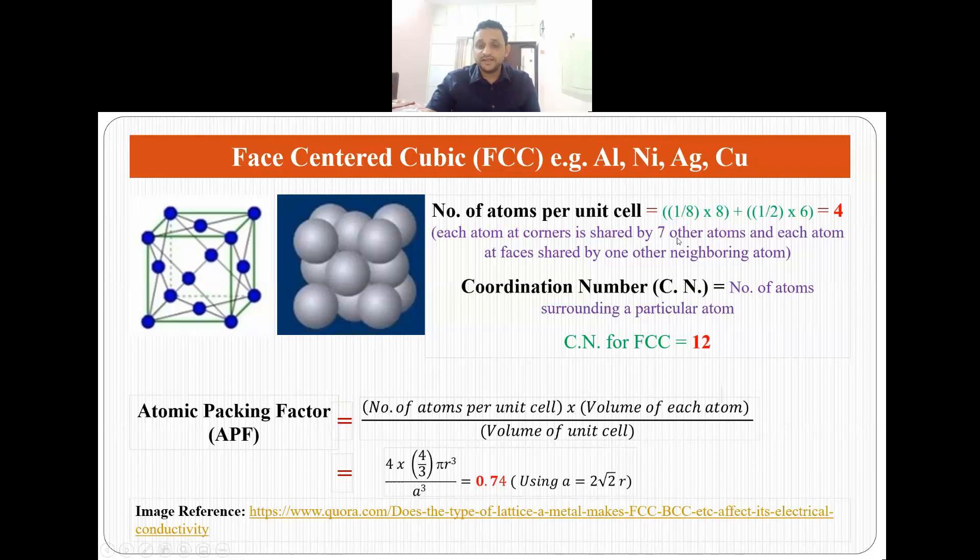The coordination number in case of FCC systems is 12. It means each atom in FCC crystal structure is surrounded by 12 other atoms.